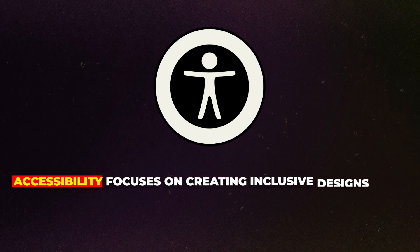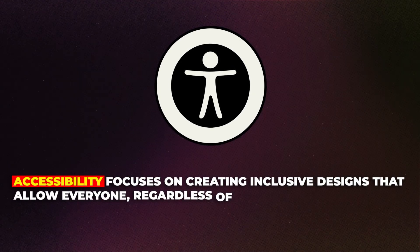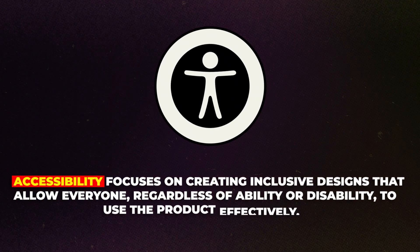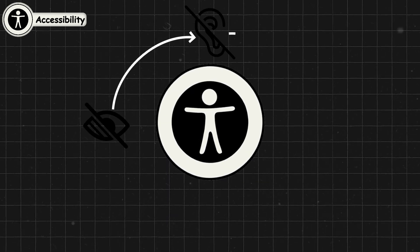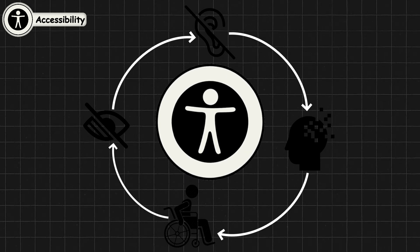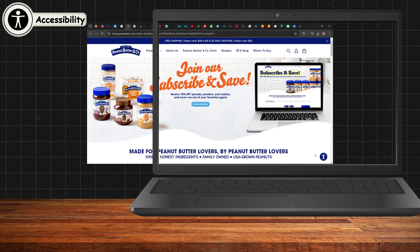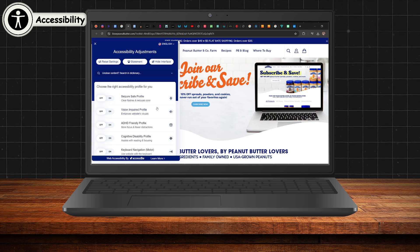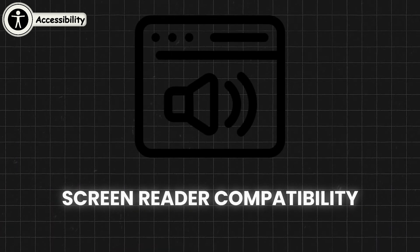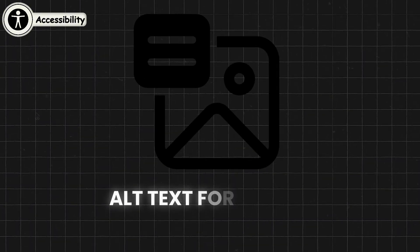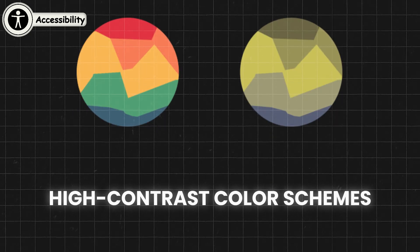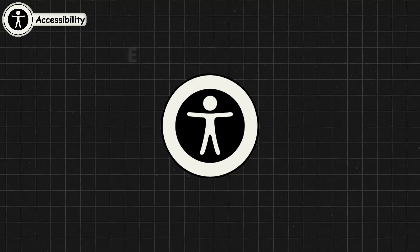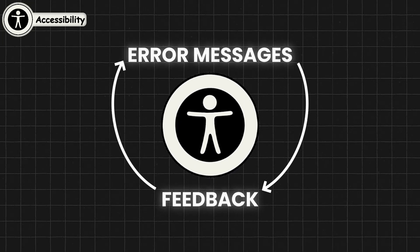Accessibility focuses on creating inclusive designs that allow everyone, regardless of ability or disability, to use the product effectively. Accessibility is about removing barriers so that people with visual, auditory, cognitive, or motor impairments can still have a positive experience. Designing for accessibility involves considering a wide range of needs, such as providing screen reader compatibility, ensuring keyboard navigation, adding alt text for images, and offering high contrast color schemes for users with visual impairments. Inclusive design also requires that error messages and feedback are clearly communicated and easy to understand for all users, regardless of their abilities.